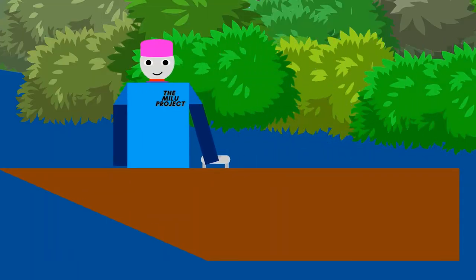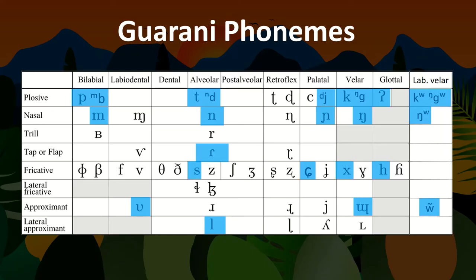We'll first look at the phonology. These are the consonants. Instead of just using regular oral stops, the voiced stops are pre-nasalised. We also see some alveolo-palatal sounds, as well as labio-uvular ones. And most of the sounds have something called nasal allophones, but we'll talk a bit more about that later.